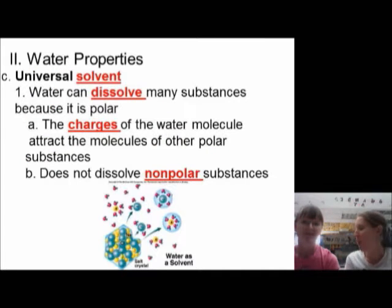On to the next property of water. Universal solvent. So water is really really good at dissolving stuff. That's what a solvent is. It's something that can dissolve. And the reason it's so good at dissolving is because it's polar. What does polar have to do with dissolving? Polar, it gets back to the magnets. It can stick to other things that have a charge.